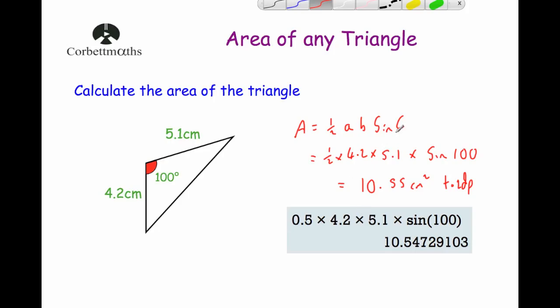And that's it. So that formula ½abSinC is really useful to work out the area of any triangle. As long as you know two sides and the angle between them, you can use the formula to work out the area of the triangle.